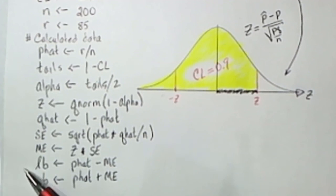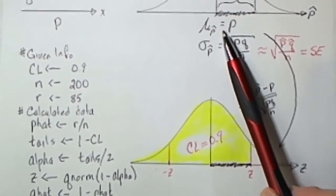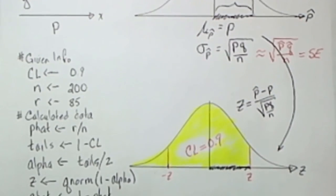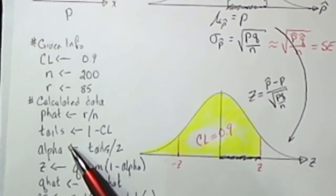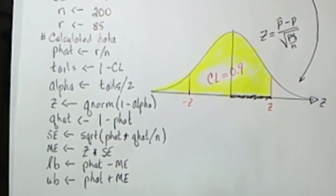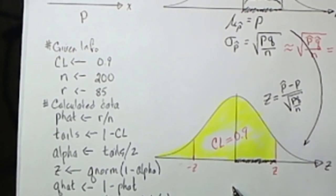Now why that gives us a 90% confidence that we actually have the population mean in there that will be discussed in another video. But this R script is kind of a generic R script for finding the confidence interval in a proportion problem.